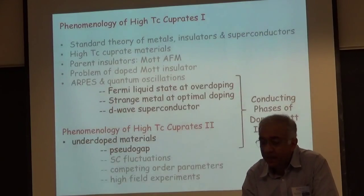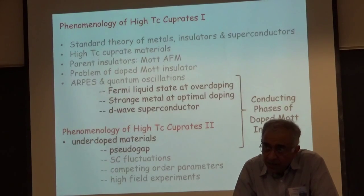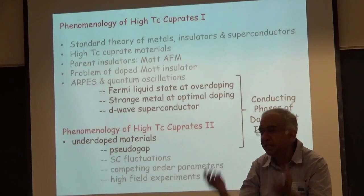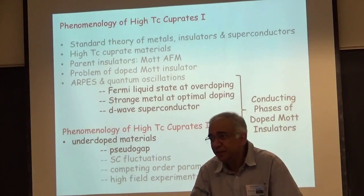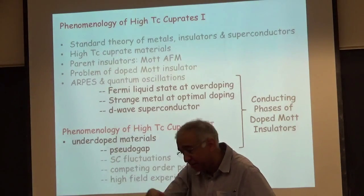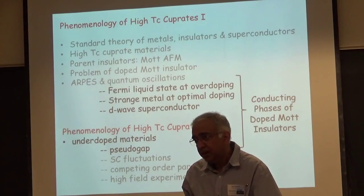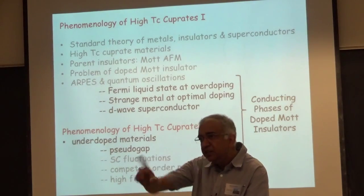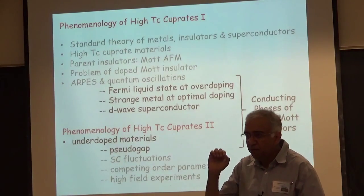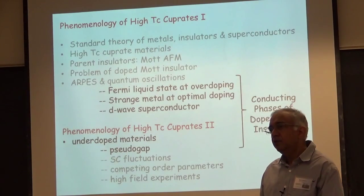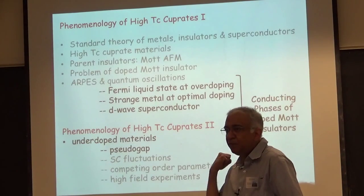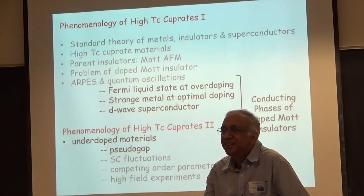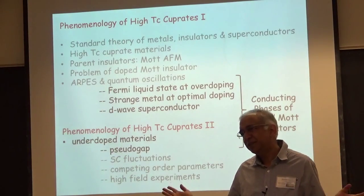Are there experiments confirming that interesting things happen on the copper oxide planes? Yes. For instance, STM looks atomically resolved, so you can see the top oxide planes with your naked eye. But if you look at photoemission, you see all the things I'm about to show you — Fermi surfaces, line widths, gaps. How do we know it's all happening on the copper oxide plane? By changing the polarization of the incident light, you can convince yourself that the selection rules of the orbital from which you are ejecting the electron has the symmetry of a dx²-y² orbital centered around the copper site.